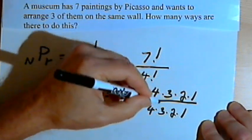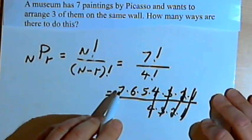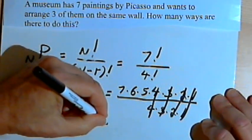And for this fraction, I could cancel out the 4s and the 3s and the 2s and the 1s. And I just get 7 times 6 times 5.